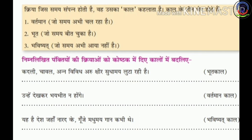Kriya jis samay sampann hoti hai, vah uska kaal kehlaata hai. Kaal arthat tense. Kaal ke teen bhed hote hain: Number ek — Vartamaan kaal (jo samay abhi chal raha hai). Number do — Bhoot kaal (jo samay beet chuka hai). Number teen — Bhavishyat kaal (jo samay abhi aaya nahin hai).